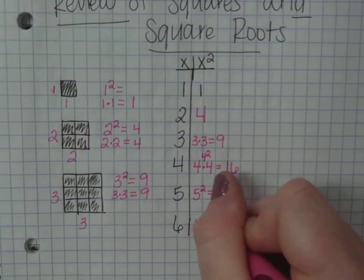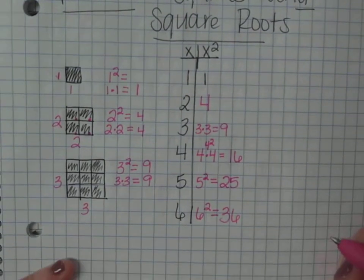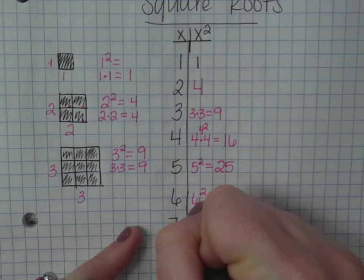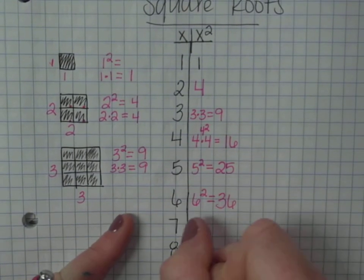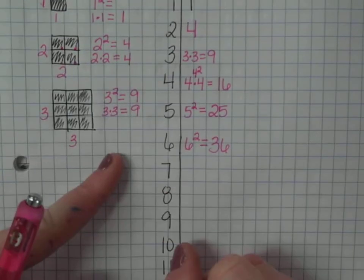6, 6 squared, 6 times 6 is 36. 7, 8, 9, 10, 11, 12. We're going to go all the way to 12.